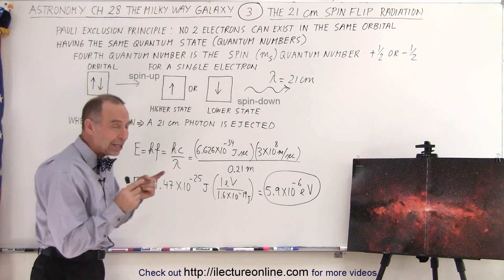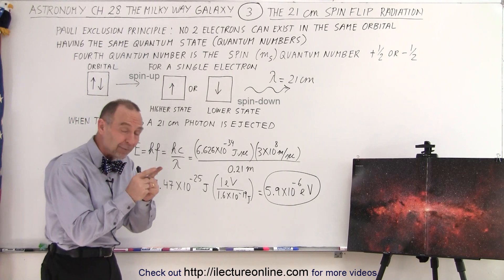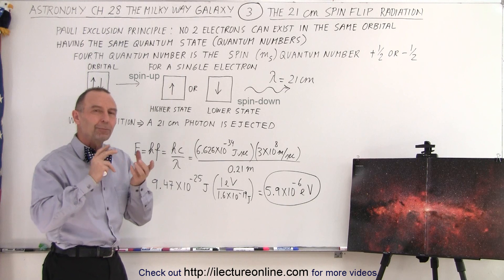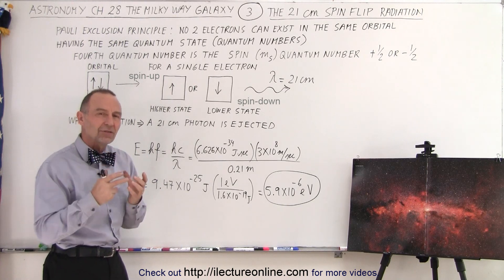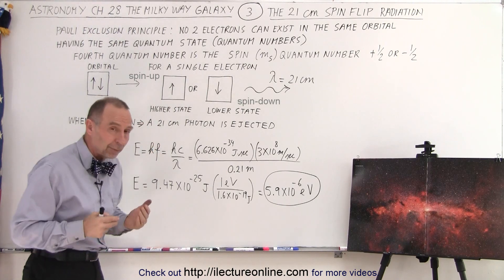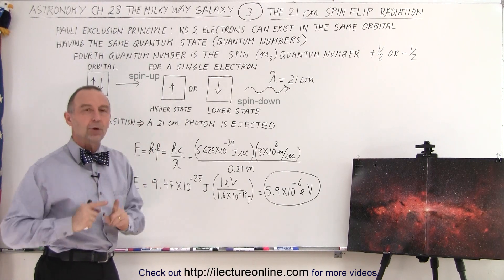He said that there's no way that any two electrons can occupy the same space, in other words the same orbital, unless they have completely different quantum states. If they have the same quantum state, the same four quantum numbers, they cannot exist in the same location.